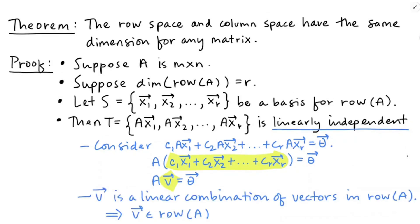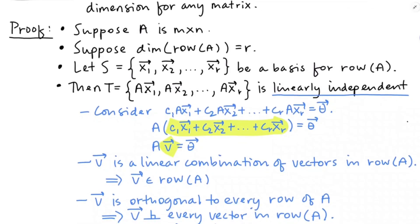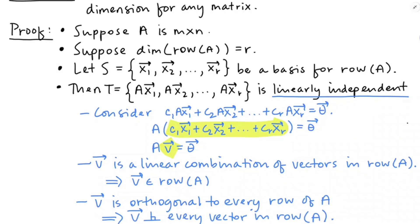Now V is definitely a linear combination of the vectors in the row space of A, because X1 through XR are the basis for the row space. So any combination of those vectors is certainly going to be in that row space. Since it's a linear combination of vectors in the row space of A, V itself is definitely in the row space of A. But then also V is going to be orthogonal to every row of A, because when I do that matrix multiplication AV and get zero, every component of the zero vector equals zero — so I did dot products of the rows of A with V and got zero every time. And since the row space of A is all sorts of linear combinations of the rows of A, V will be orthogonal to every vector in the row space of A.